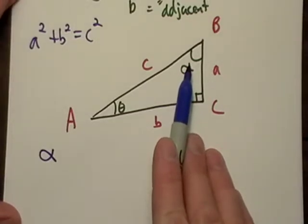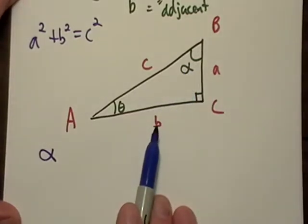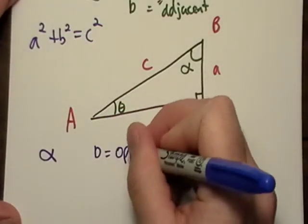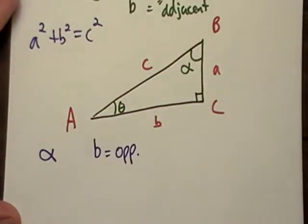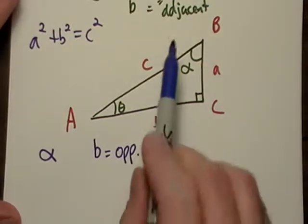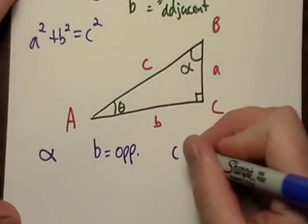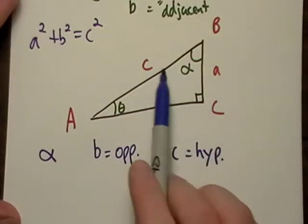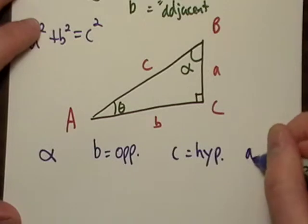With respect to angle alpha right here, what's my opposite side? Well, it's going to be B. And the hypotenuse is still going to be C.